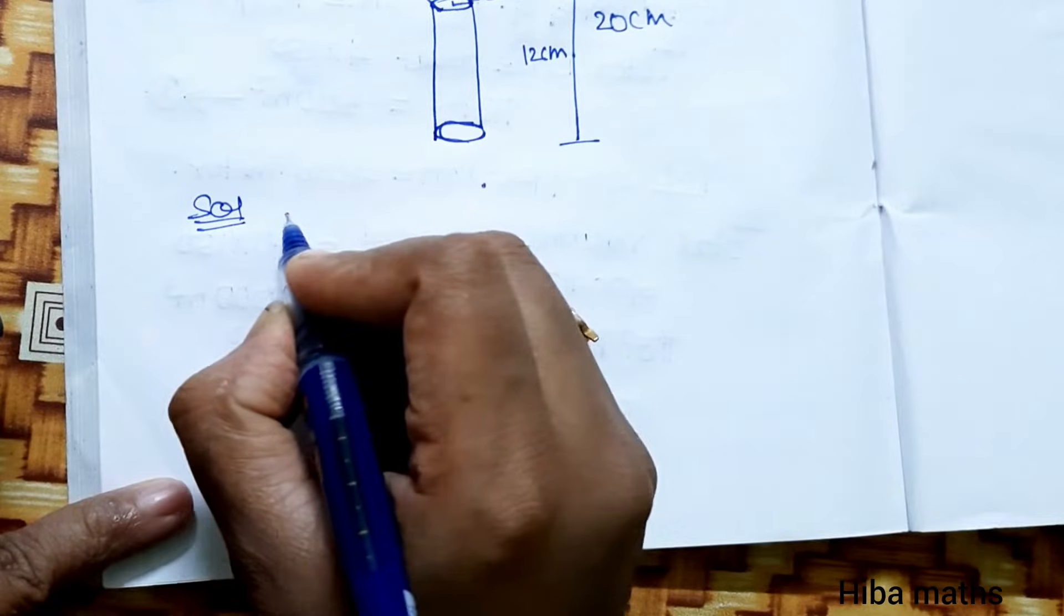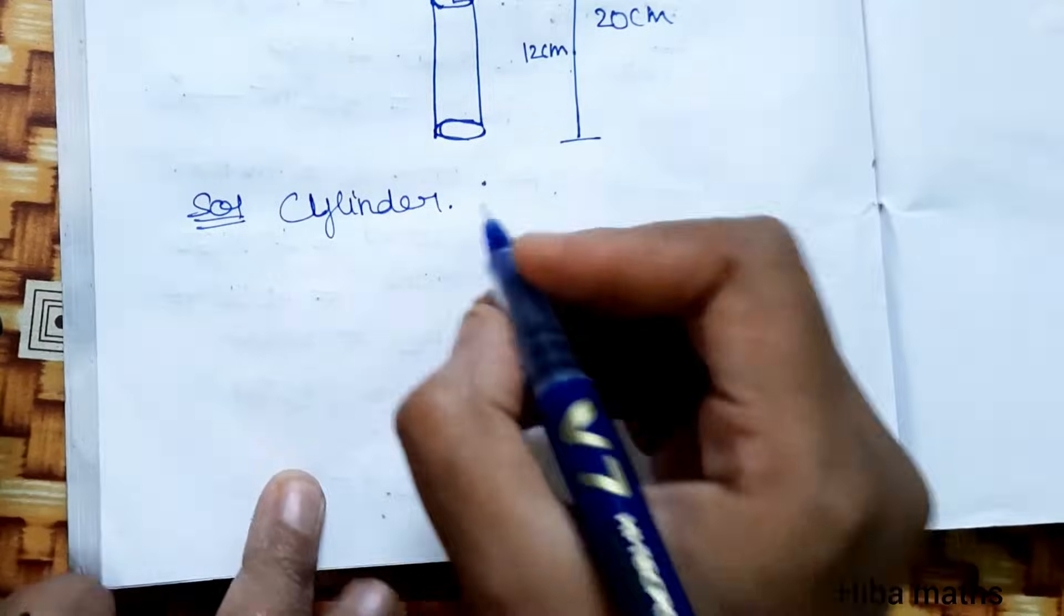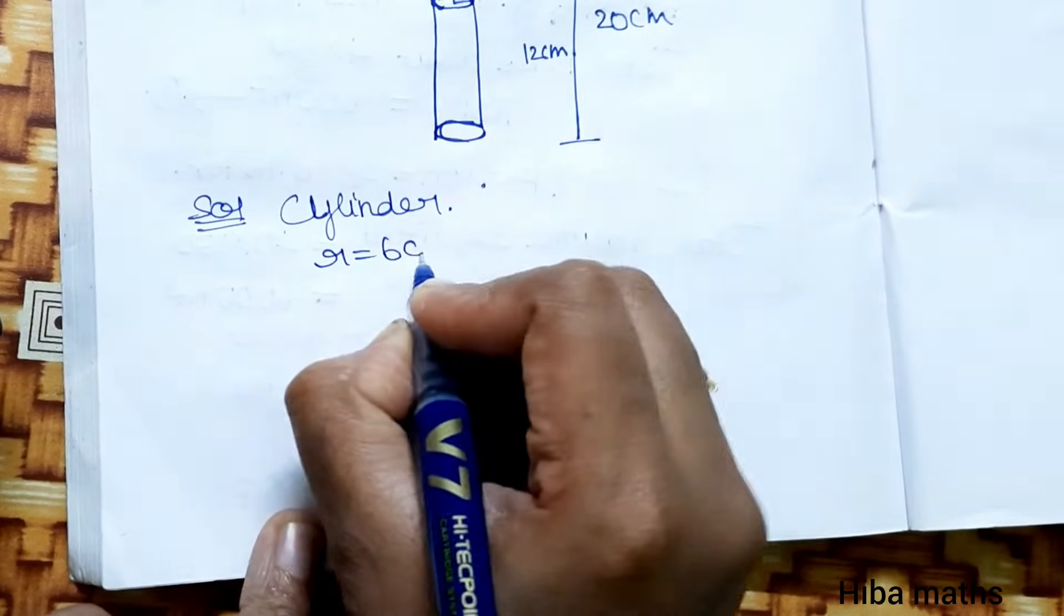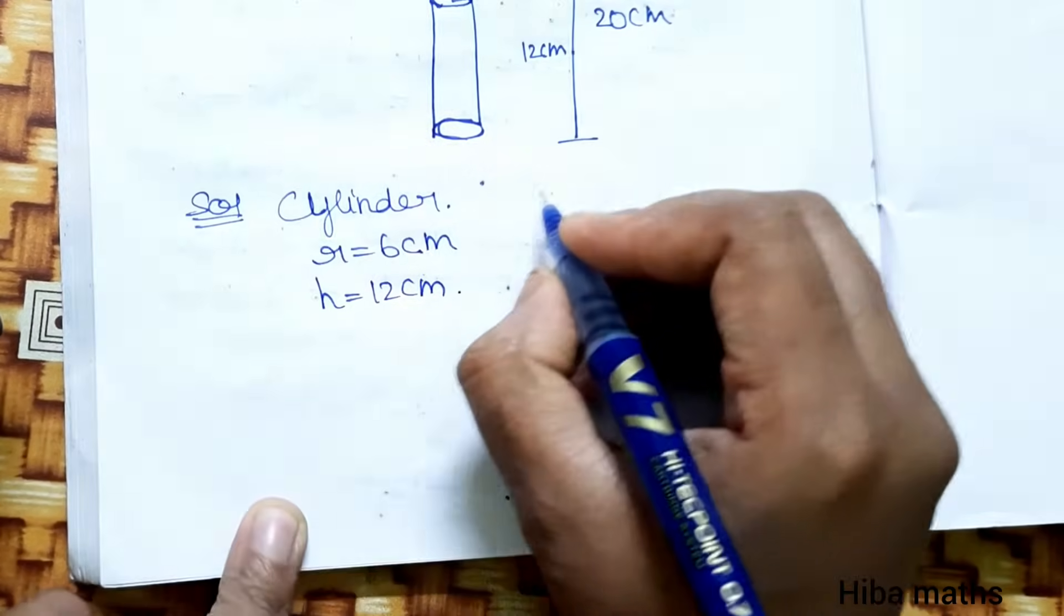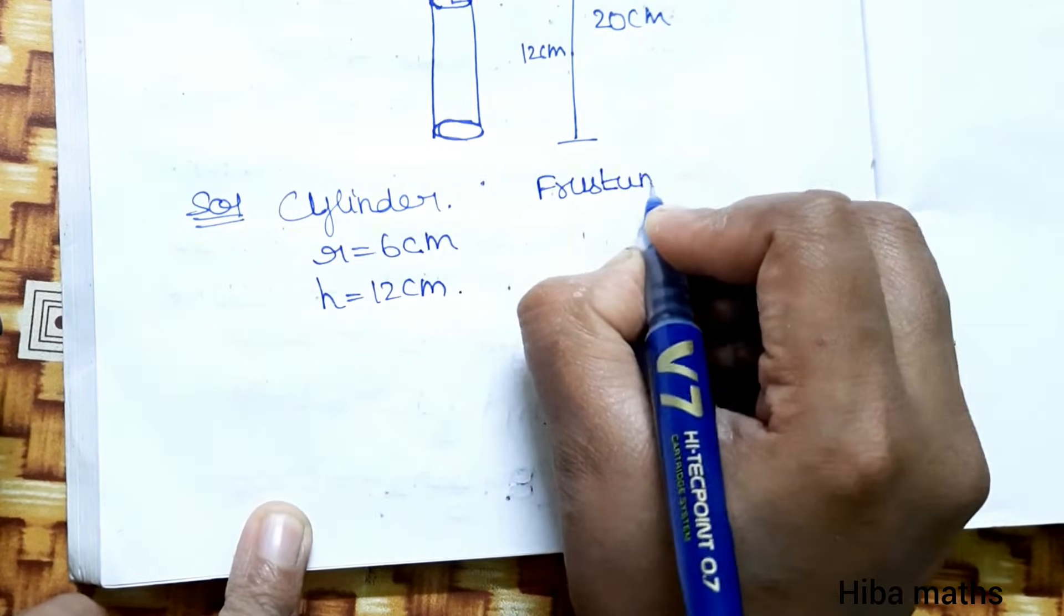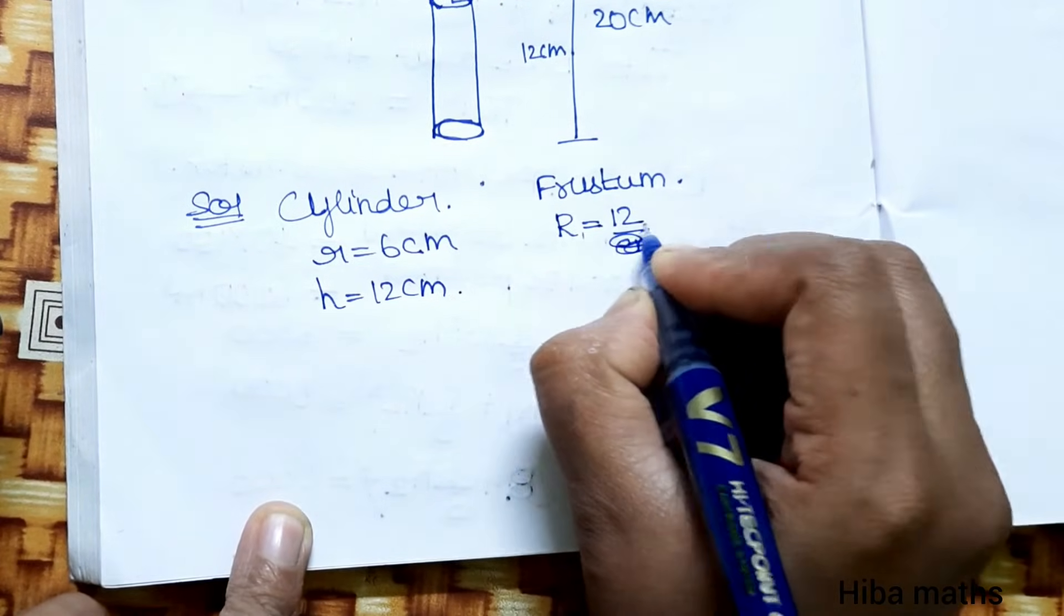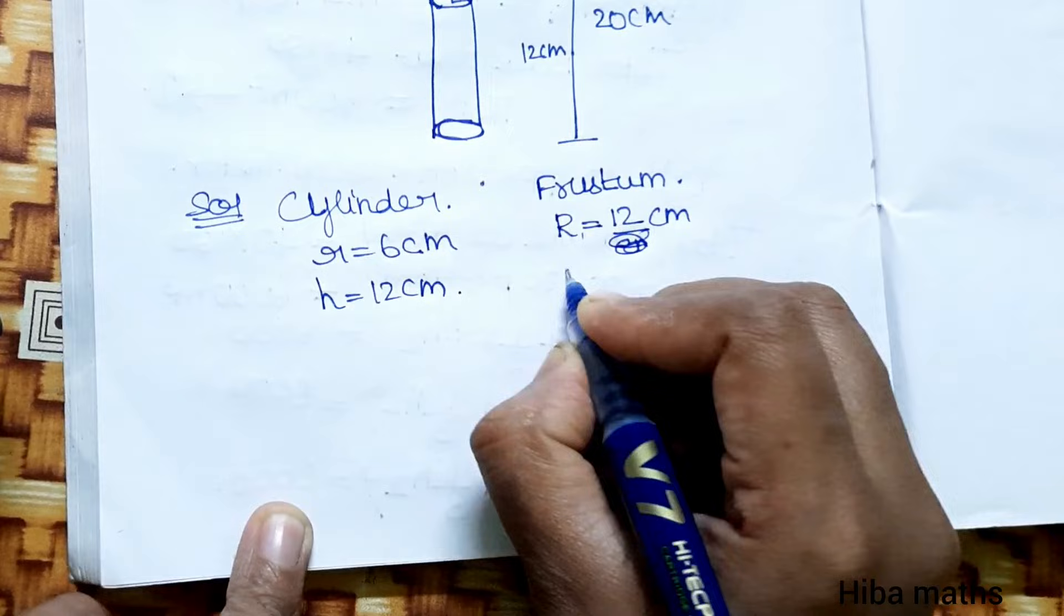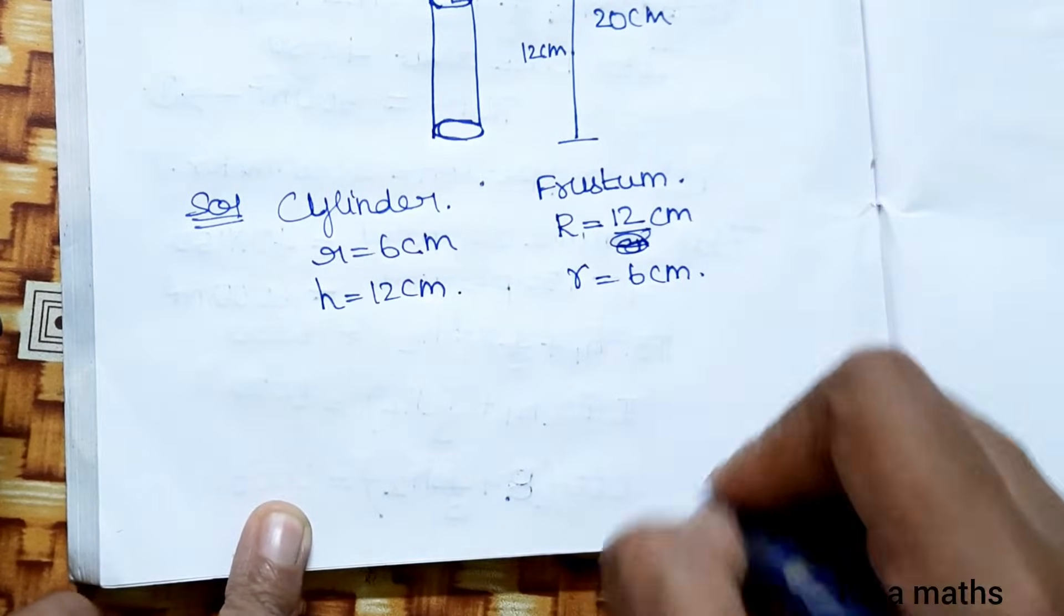Solution: First, for the cylinder, radius is 6 cm, height is 12 cm. At first, capital R is 12 cm, small r is 6 cm.